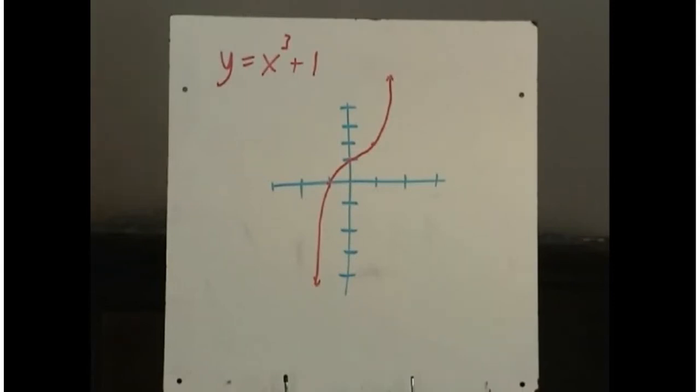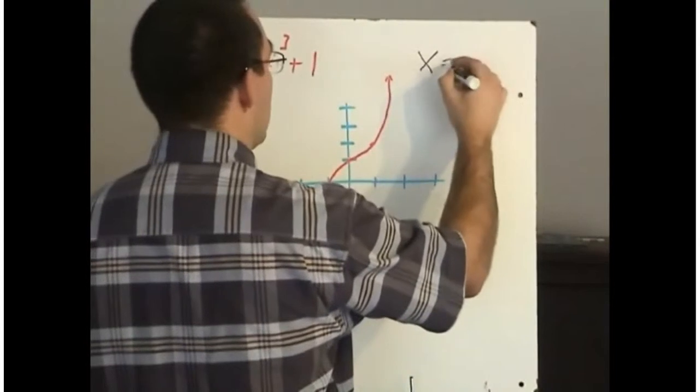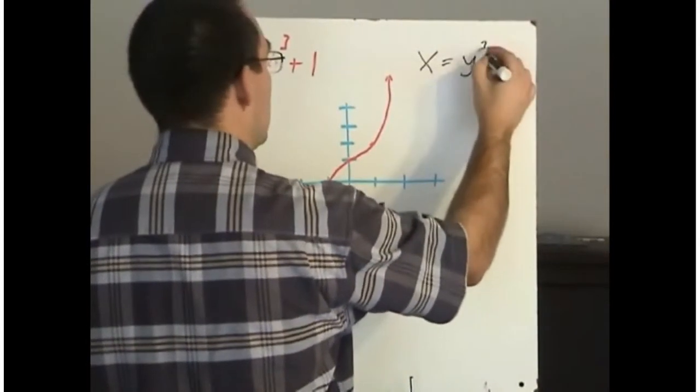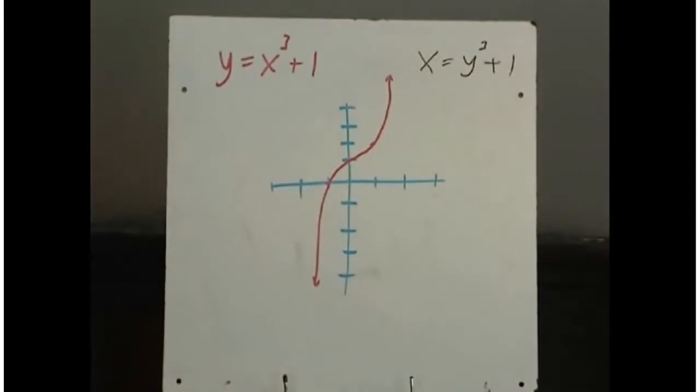But it occurs when you take the x and y values and you switch them. So the equation would apply now like x equals y cubed plus 1. So I've taken all the x values and made them y, and the y values and made them x, or switched x and y.